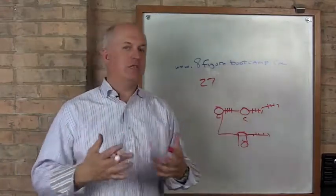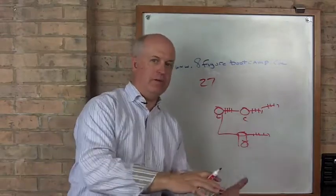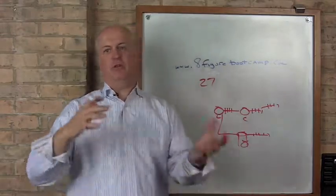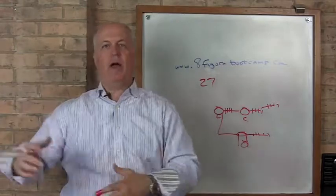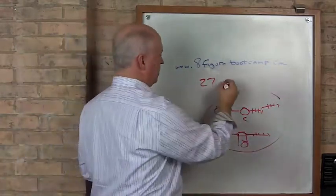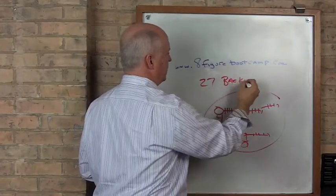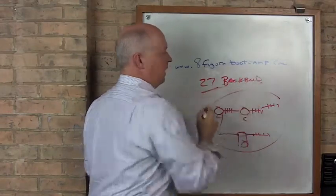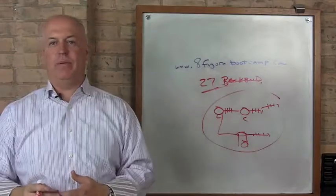One of the secrets to our success at PMI, from going from $10, $20, $50 million a year to $100, $150, $180 million a year, was being able to add multiple steps. So at the boot camp, you're going to learn 27 backend strategies that you can implement into your business.